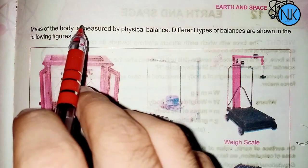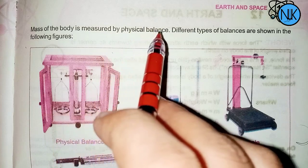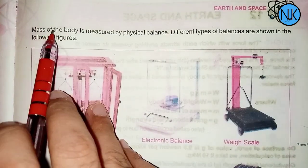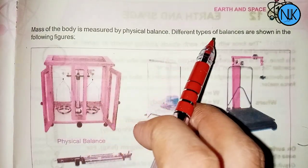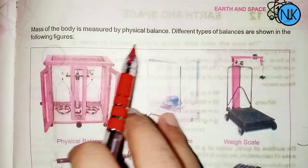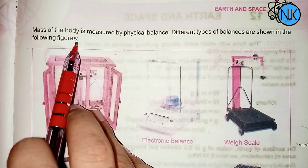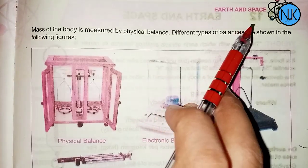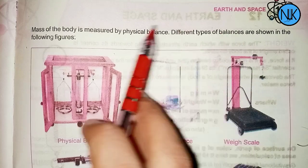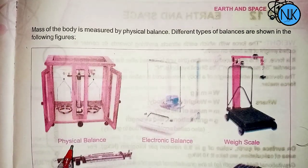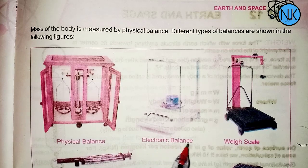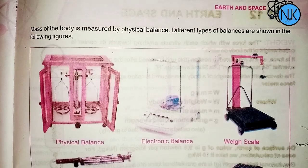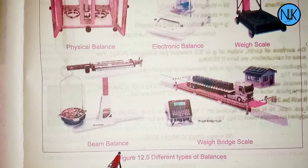Mass of the body is measured by a physical balance. Different types of balances are shown in the figure: physical balance, electric balance, red scale, and beam balance.